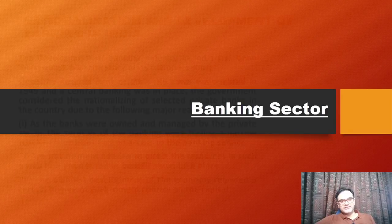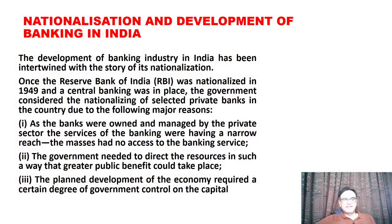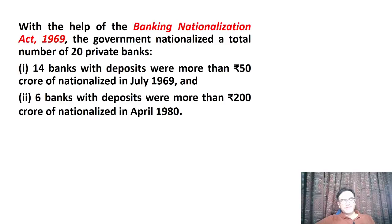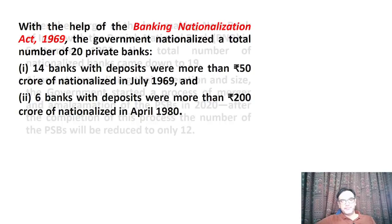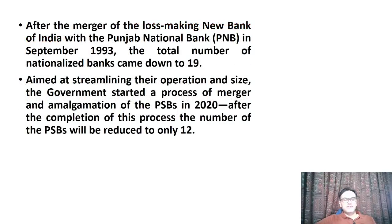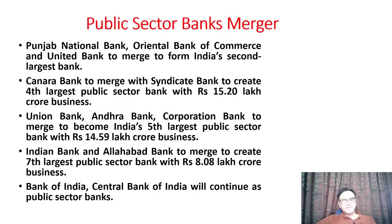Banking sector: bank nationalization happened in 1969 under Indira Gandhi — first 14 banks were made public sector banks, and later six more were added in 1980. Together they represented 90% of savings in India. With respect to public sector bank mergers — which we studied yesterday — just remember that structure. Financial inclusion is one of the goals of the banking system.